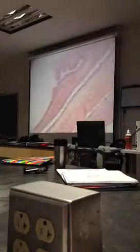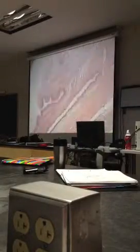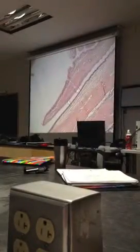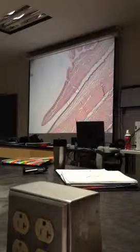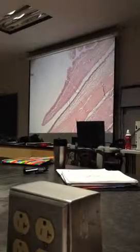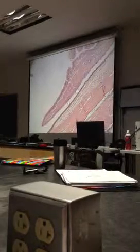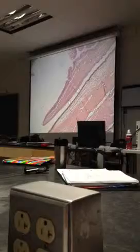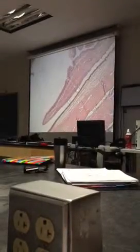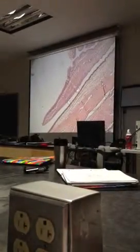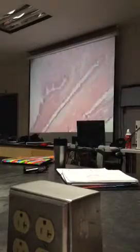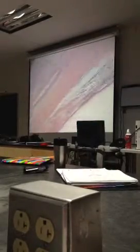Back to the conjunctiva — it goes here, and then it actually loops around and continues on the inside of the eyelid. So that's the palpebral conjunctiva in there. You can see how it does that right there.